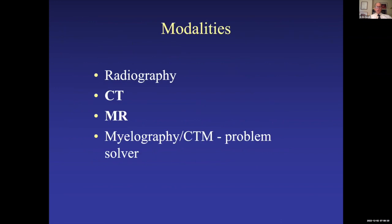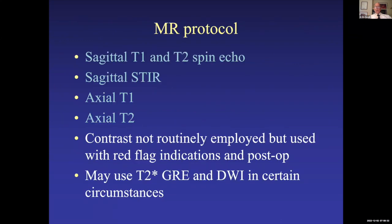We're going to talk mostly about CT and MR; we may show a few radiographs and possibly one myelogram. Our basic MR protocol includes sagittal T1, T2 spin echo, and T2-weighted STIR sequences. The STIR sequence is very sensitive to fluid — edema in bone, changes in the spine, the spinal cord, and nerve roots are best seen on STIR (short TI inversion recovery). We then do axial T1 and T2. We don't routinely use contrast, though we may use gradient echo studies for hemorrhage and diffusion sequences for ischemia of the cord or conus.